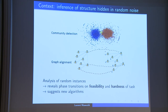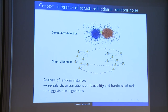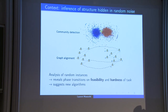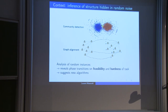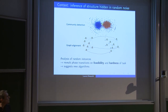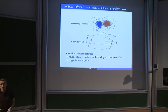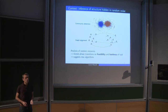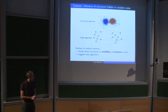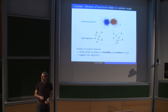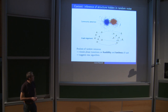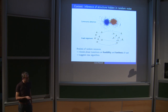There are algorithms for all of these tasks, but it's hard to say which one is good or what the difficulty of the task is. The philosophy of the work I'm going to describe is: let's look at large random instances of these inference problems. By analyzing those large random instances, we'll have a handle on the hardness of the task, prove theorems about feasibility, and may also develop new algorithms.